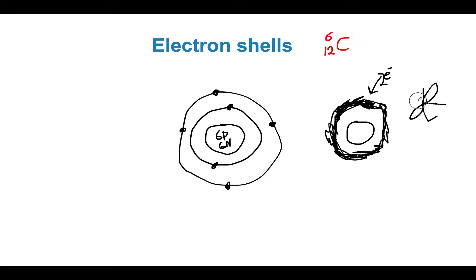Don't worry about the shapes. Just remember that when we draw orbitals as straight lines, it's really not a straight line — this is just for ease of representation. Electron shells are actually spaces around a nucleus, at a particular distance from the nucleus, in which there is a probability of finding electrons.